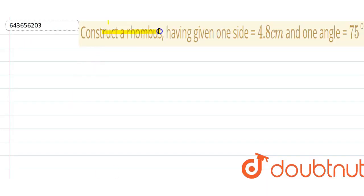Construct a rhombus having given one side is 4.8cm and one of the angle is 75 degrees.